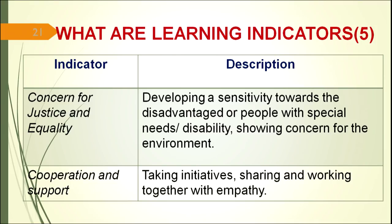Concern, justice and equality as an indicator involves developing sensitivity for the disadvantaged groups of society and those with special needs, since developing sensitivity is one of the important considerations of EVS learning. The last indicator is cooperation and support — taking initiative for improving the environment, sharing and working together, and developing empathy, love and affection.